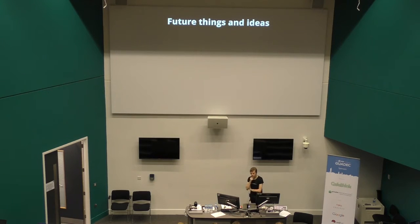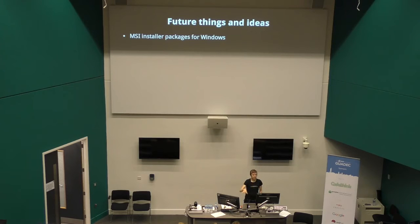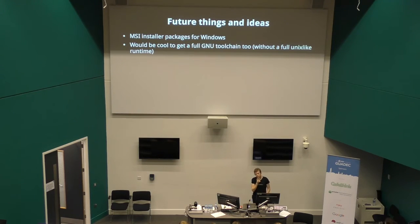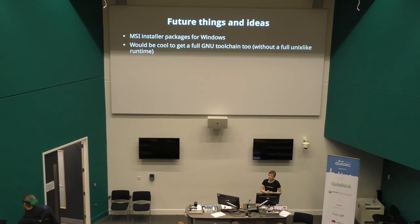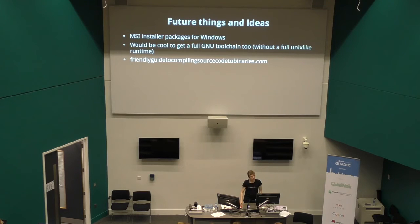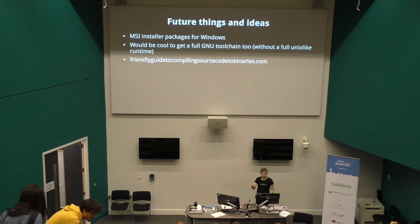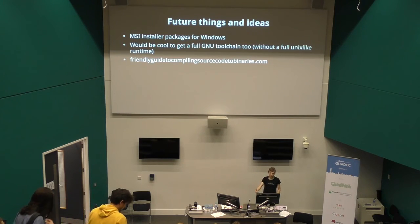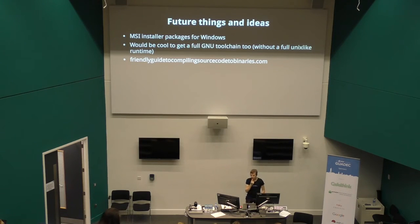Closing thoughts: we're going to have an MSI installer package for Windows — you just install it, it ships as an executable, you can run Meson without worrying about installing Python. It would also be nice if there was a full GNU toolchain as an MSI package — something like MinGW, just the compiler executables as one thing, easy to install to get new people using it. There's also an idea for a simple web page explaining how to compile source code into executables — how to install dependencies, what tools to use — very simple, for new people. That thing doesn't exist and it would be nice for onboarding.